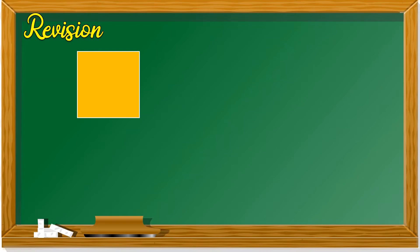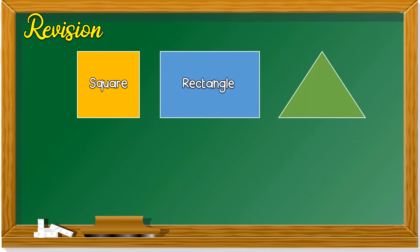Let's do some revision first. What shape is this? A square. How about this one? A rectangle. This? Yes, this is a triangle.